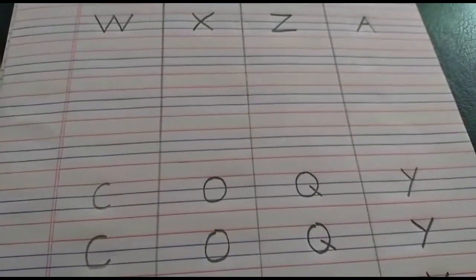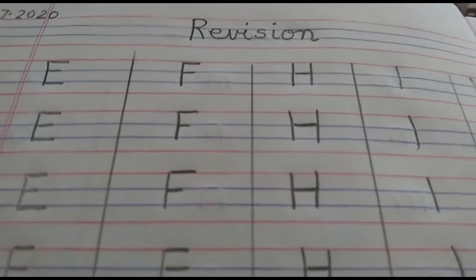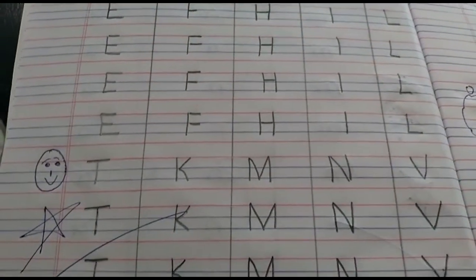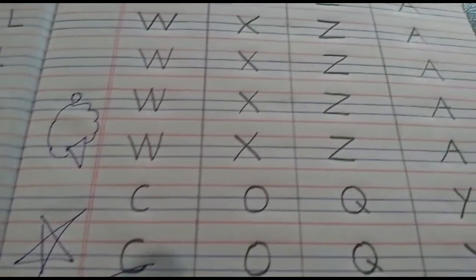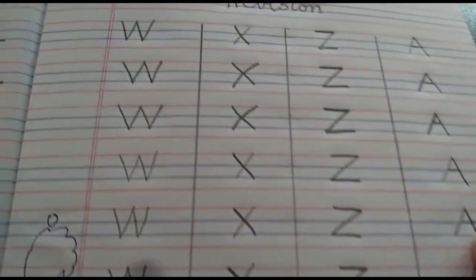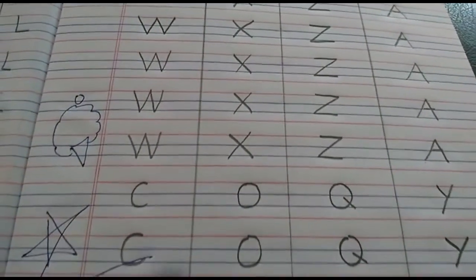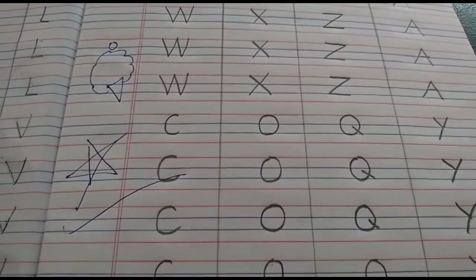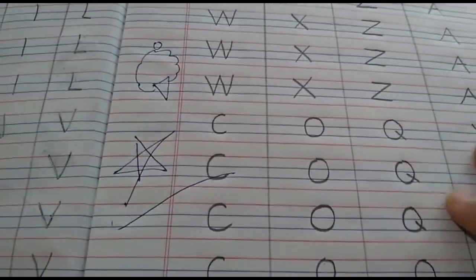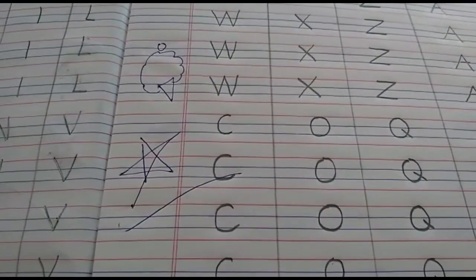Okay children, I hope you have understood how to write the letters. After we complete our writing of revision, this is how your book is going to look neat and tidy. You are very well aware that if you do neat work, then mama is going to give you a star. We will only get neat work if we are not going to use the eraser. I hope you have understood how to complete today's home fun activity. Till we meet again, bye!